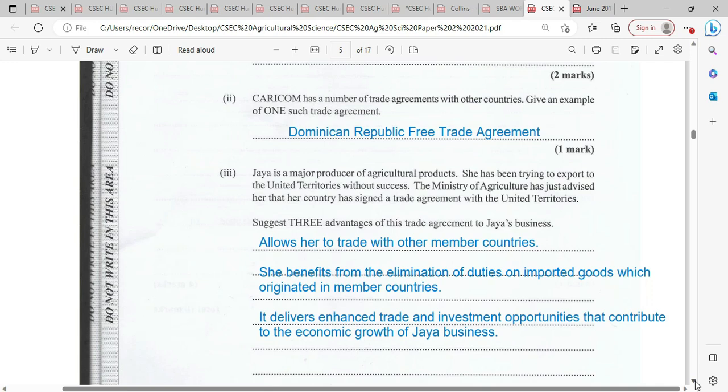Jaya is a major producer of agricultural products. She has been trying to export to the United Territories without success. The Minister of Agriculture just advised her that her country signed a trade agreement with the United Territories. State three advantages of this trade agreement to Jaya's business.